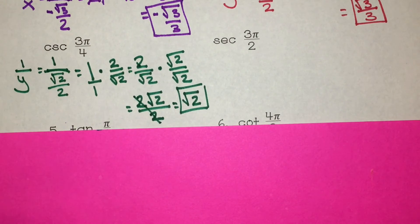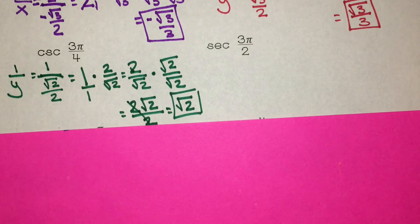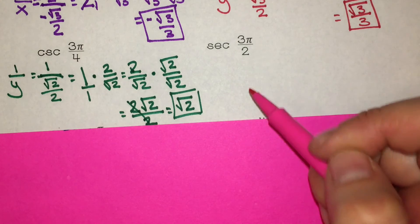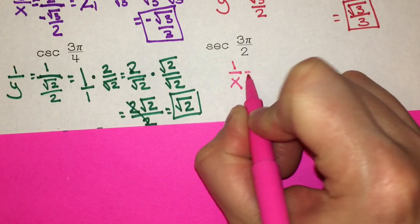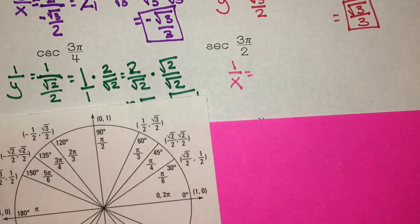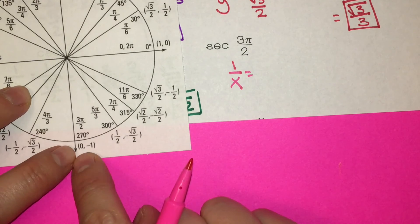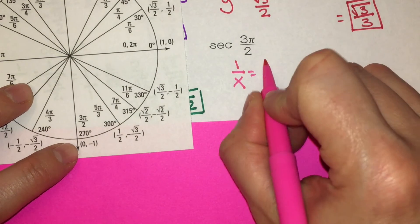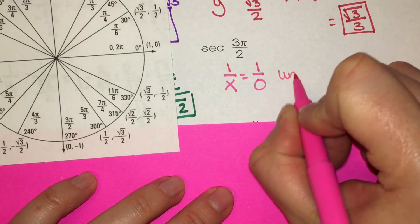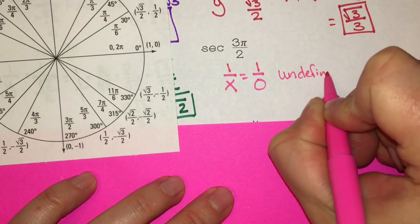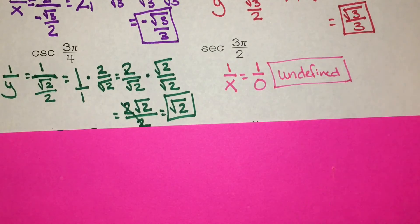Let's try one more: secant of 3π over 2. Secant is 1 over x, and at 3π over 2 the x coordinate is 0. So this is 1 over 0, but you cannot have 0 in the denominator, meaning this is undefined.